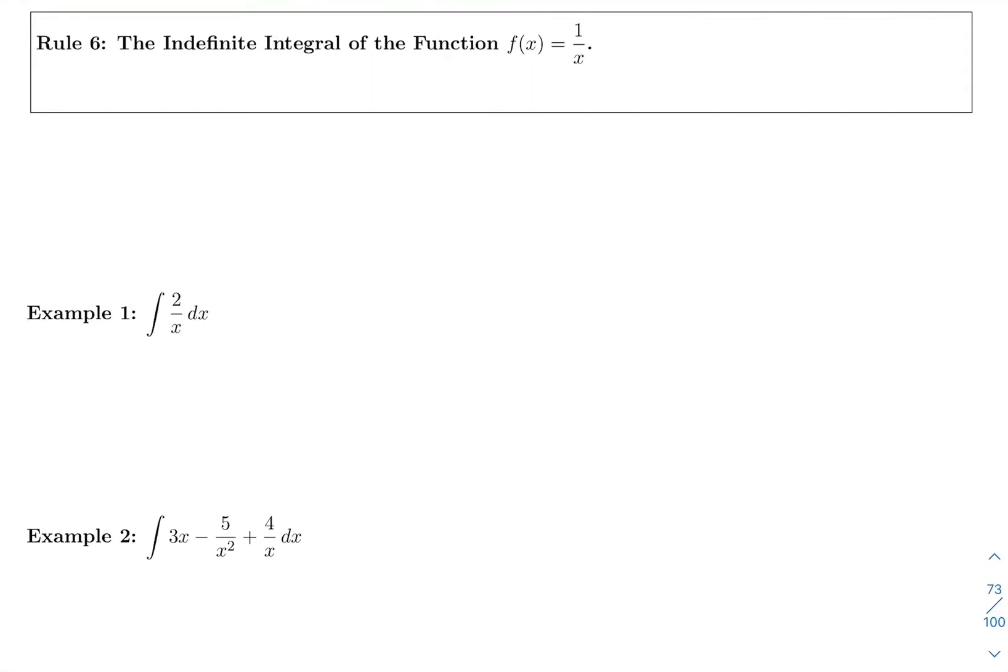Rule 6: we have the indefinite integral of the function 1 over x. We have some space before example 1. Let's just try to apply our regular rule to this. So if you had the antiderivative of 1 over x, the first thing you would do is rewrite this as x to the negative 1 dx.